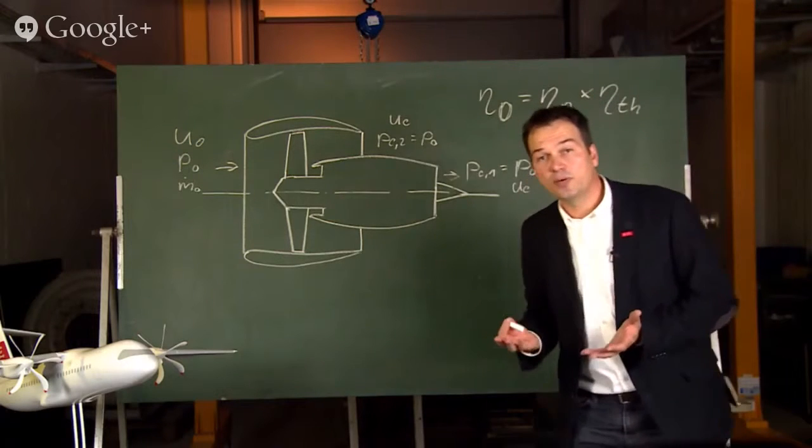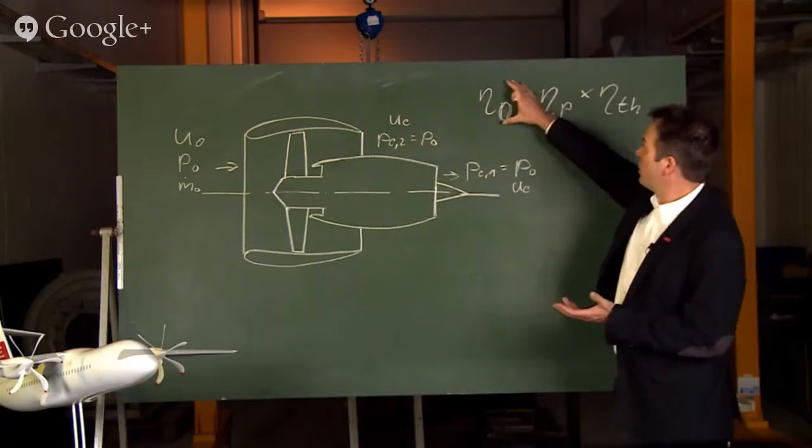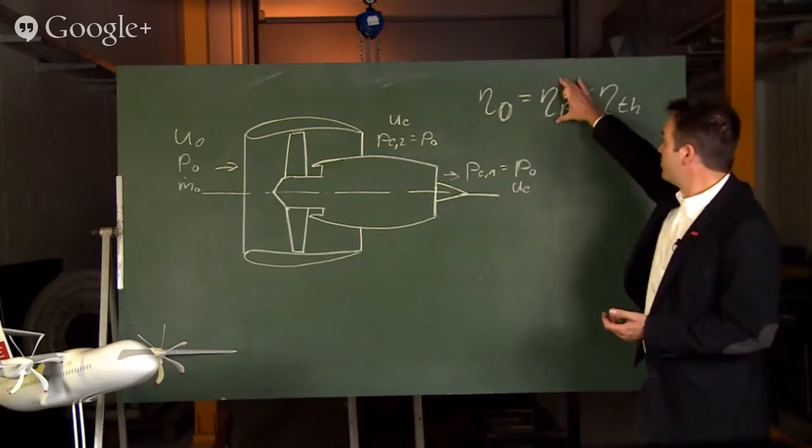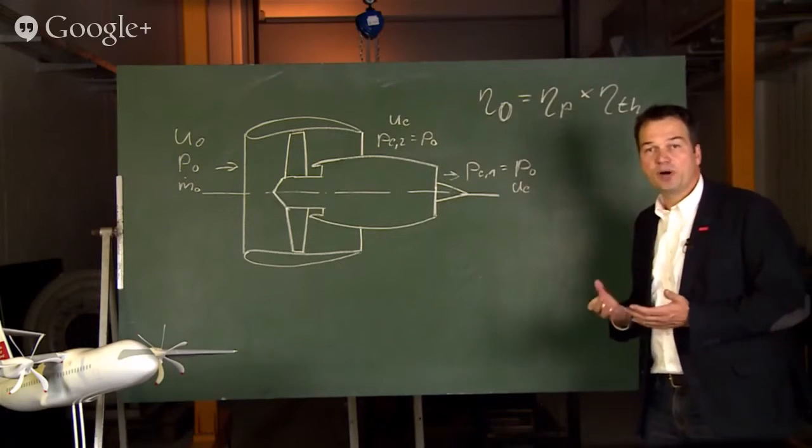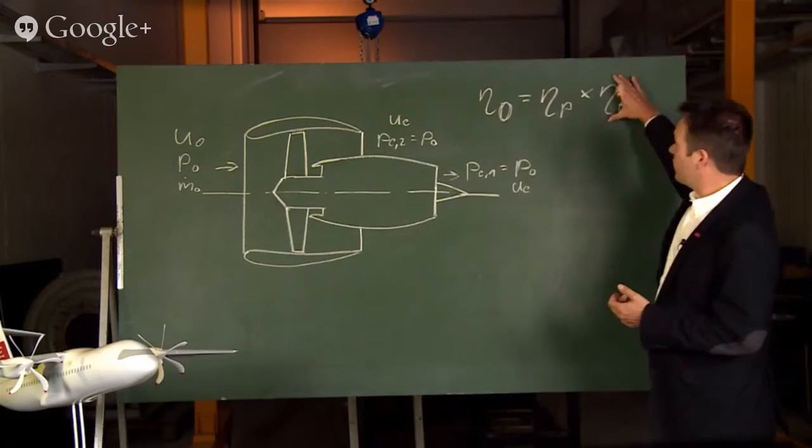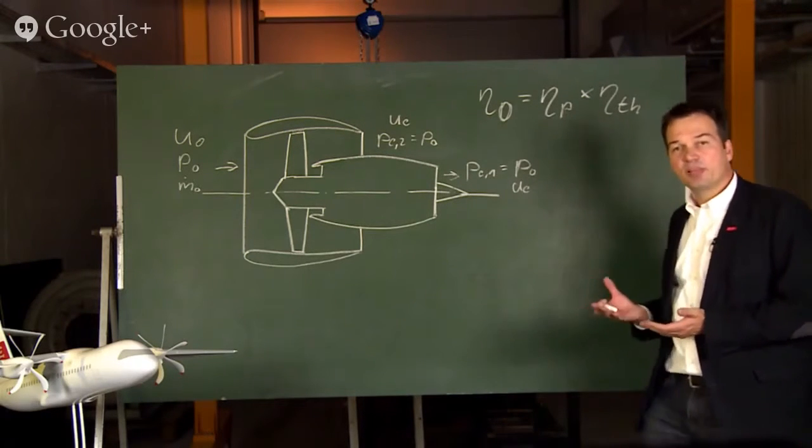In other words, this is the power of thrust divided by the power of fuel. This is the power of thrust divided by the power of the exhaust jet which is leaving the engine, and this is the power of the exhaust jet divided by the power of fuel.